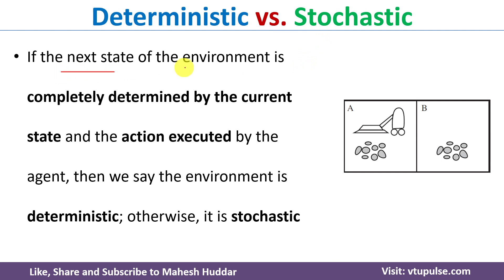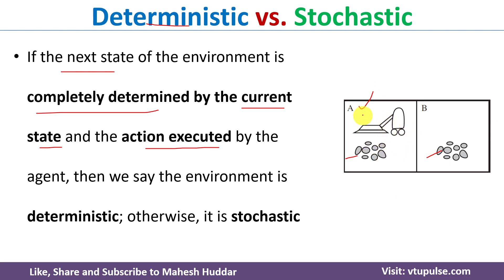The third property is deterministic versus stochastic. If the next state of the environment is completely determined by the current state and the action executed, then it is called deterministic. For example, if the agent is in location A and both A and B are dirty, and the agent senses that A is dirty and executes a suck action, the next state will be: location A is clean, location B is still dirty, and the agent is still in A. The next state is fully determined, so it is a deterministic environment. If this is not possible, it is called a stochastic environment.